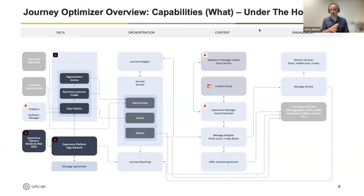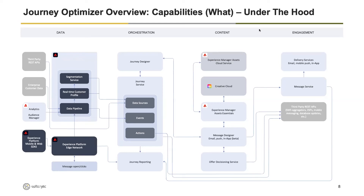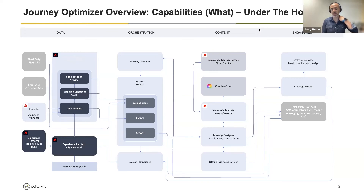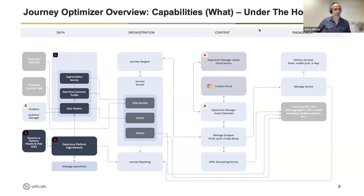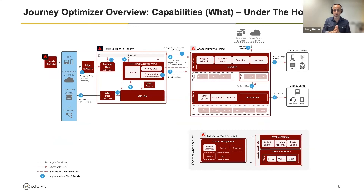Ivan added that by centralizing the data, you're able to not only feed everything into all of your engagement workflows with Journey Optimizer, but it also touches into how you can use the same profile data, workflows, and engagement data to run reports in Customer Journey Analytics as well. That's a great point — the idea of reusing things, so if you build something in Journey Optimizer, whether it's the data model or the journey itself, that can be reused for analysis later on.